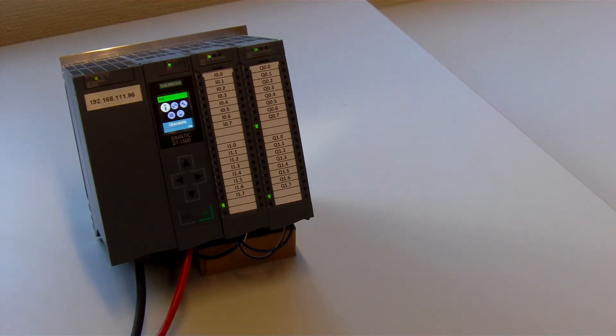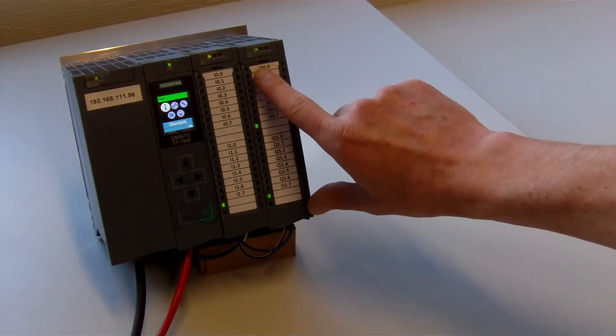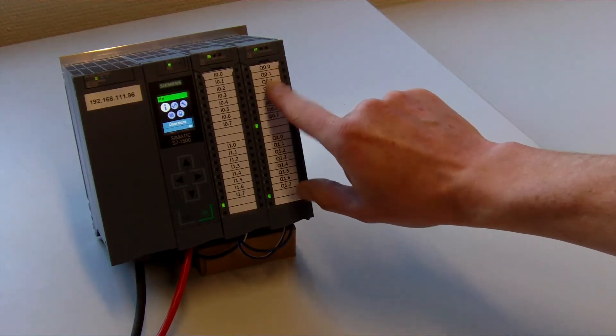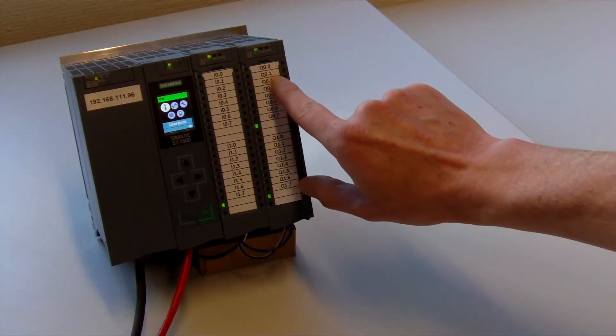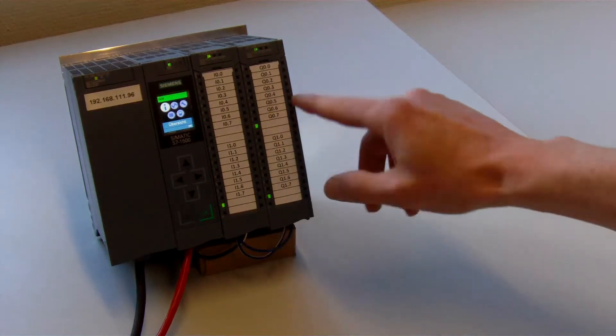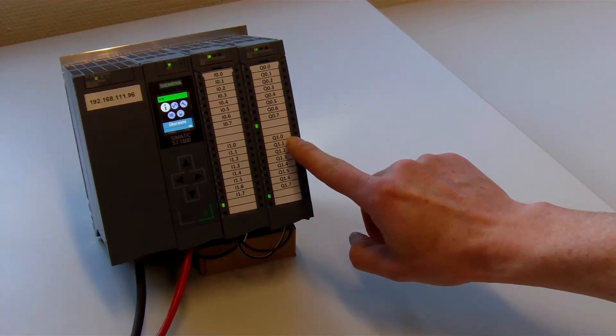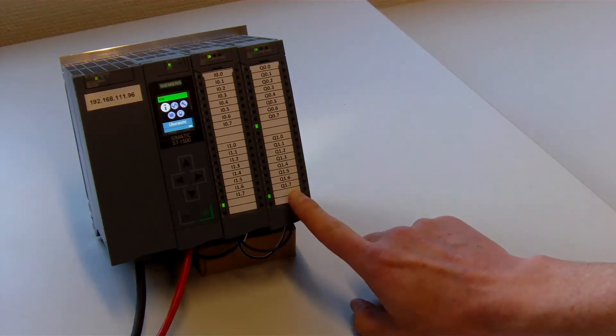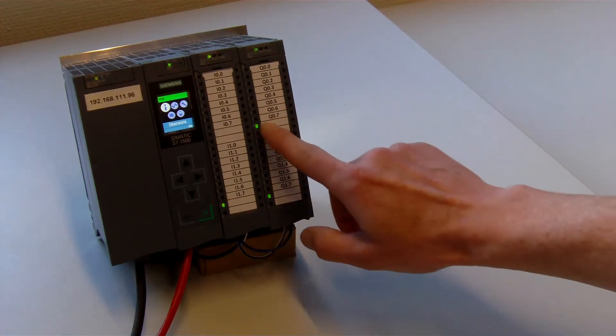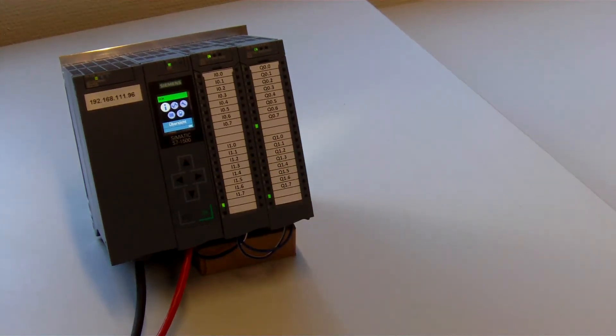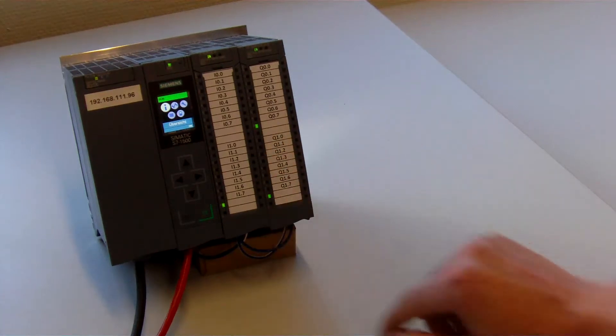Especially button 1 sets the Q0.0, button 2 Q0.1 and so on. The slider is setting the value Q0.0 to Q1.7, which is actually a byte. The slider value represents this area.